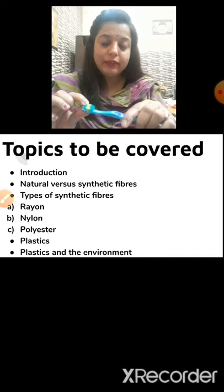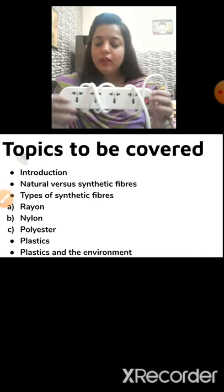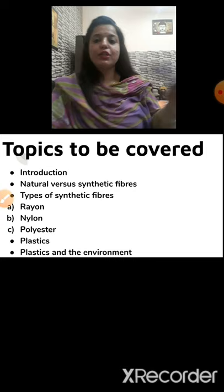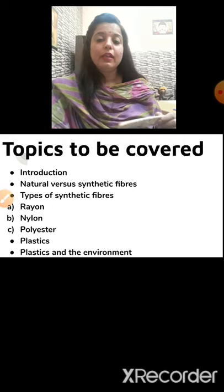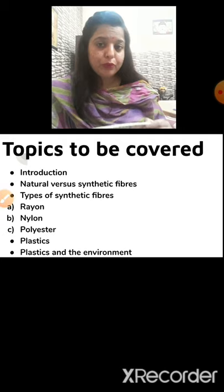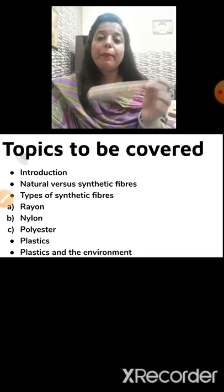I am having this extension board with me — it is made up of plastic. Then, I am having a toy which is also made up of plastic. So we can say that around us, there are so many things made up of plastic and synthetic fiber. This is a comb, also made up of plastic. So surroundings have many things made up of synthetic fibers and plastic.